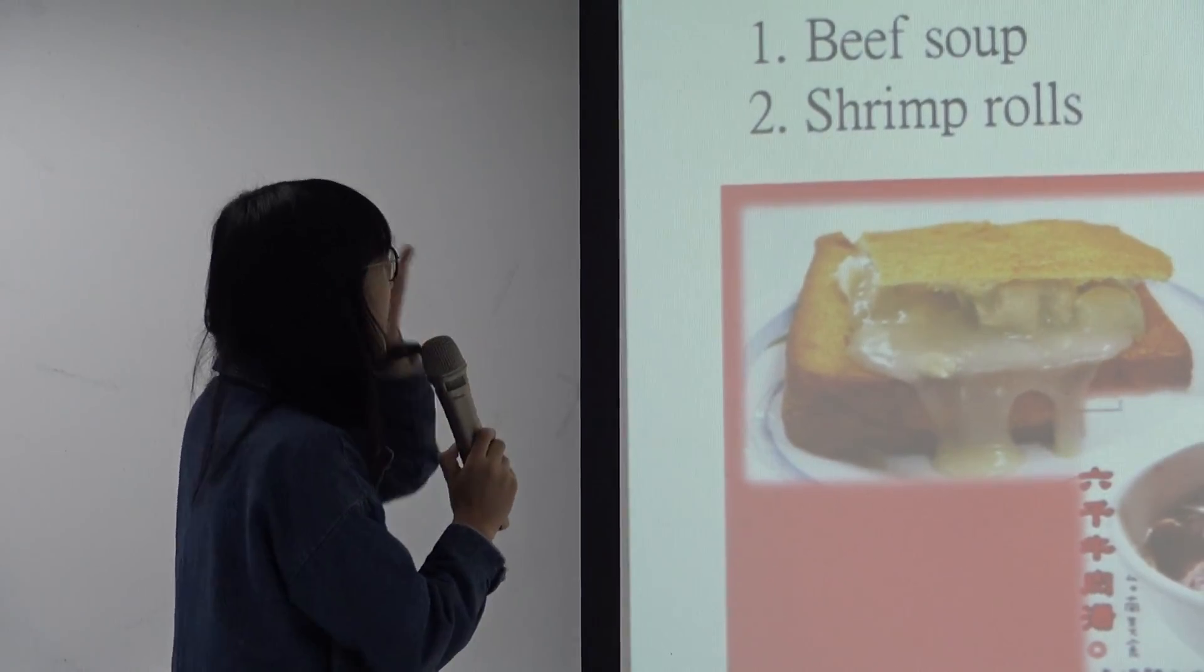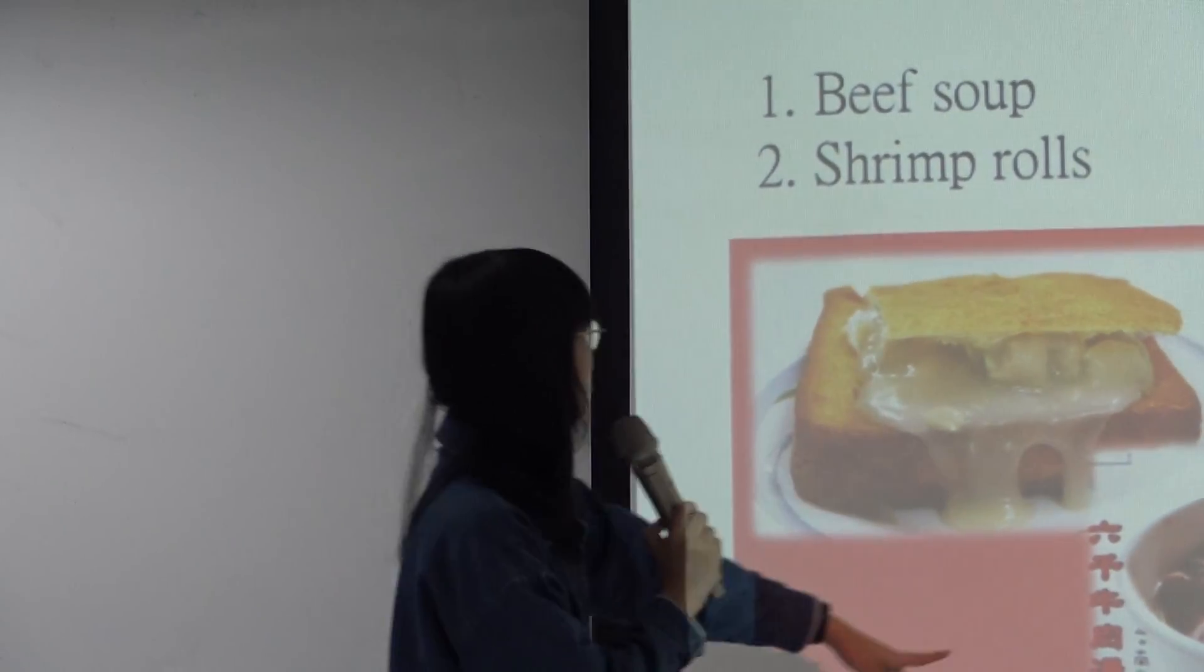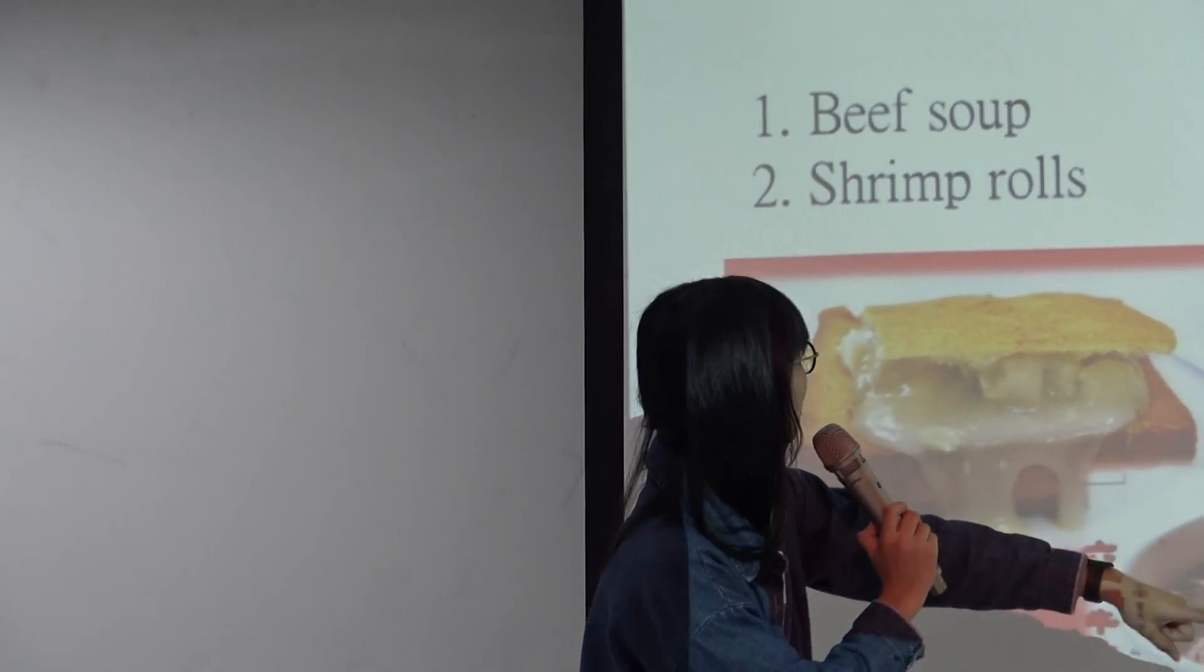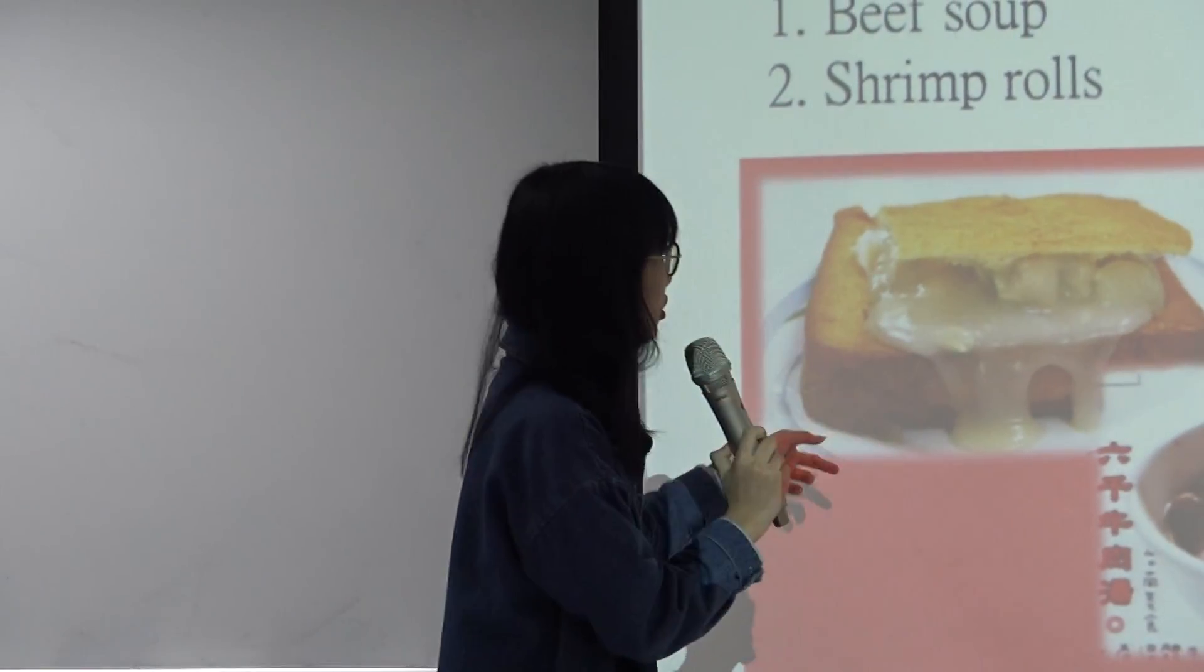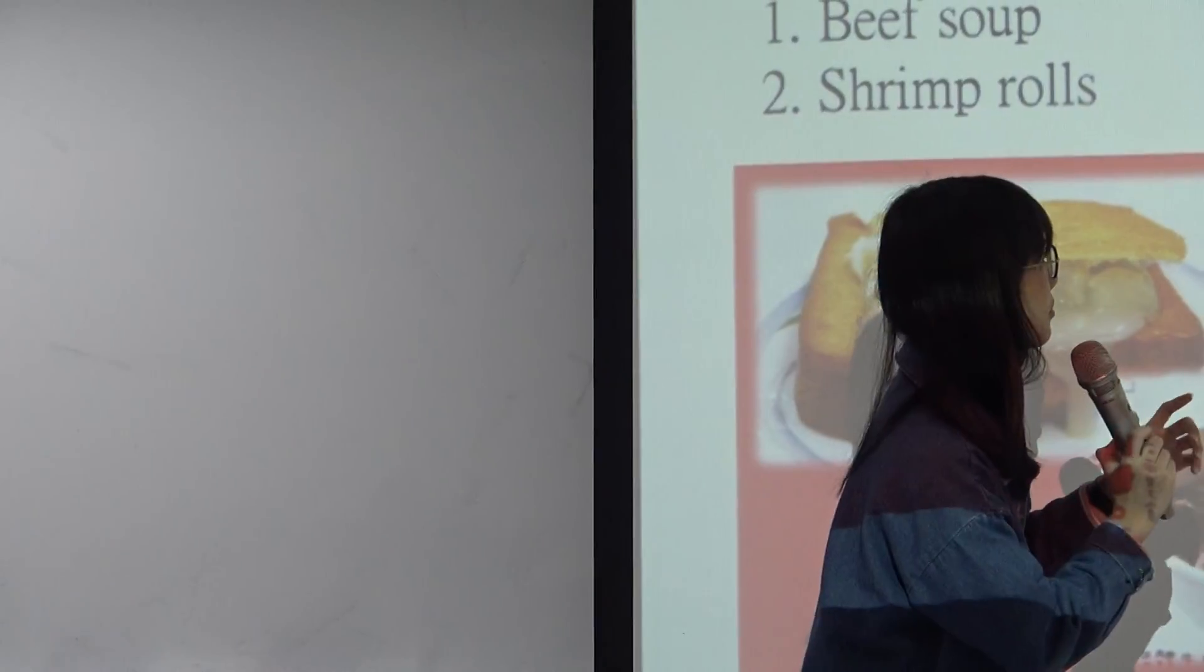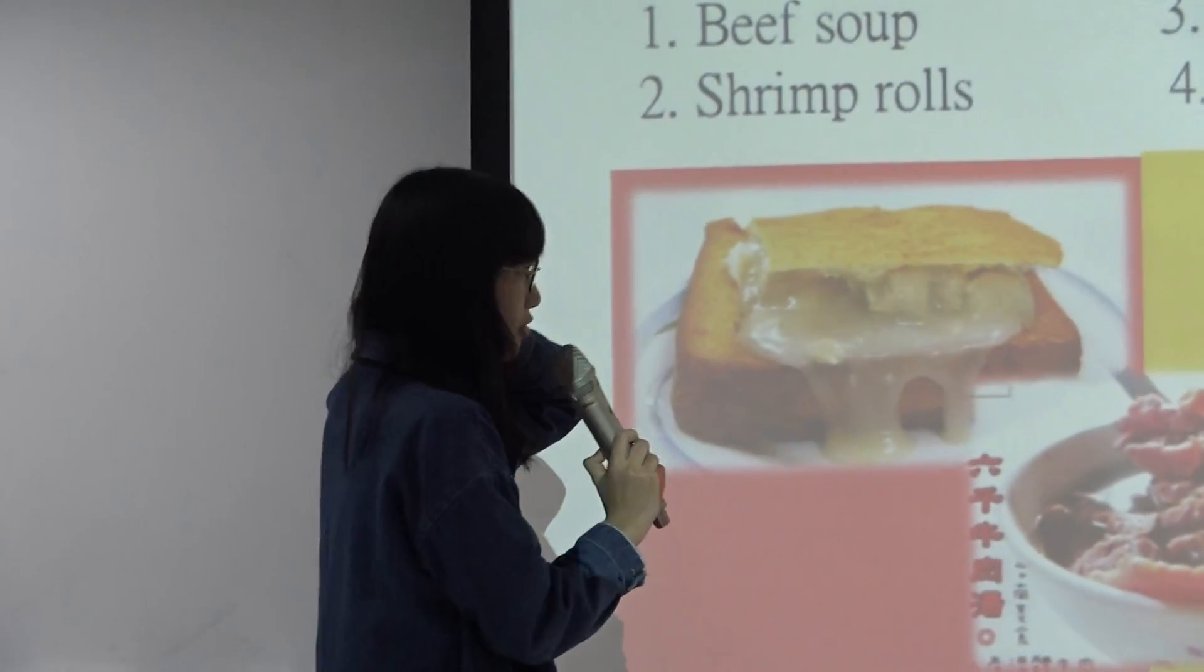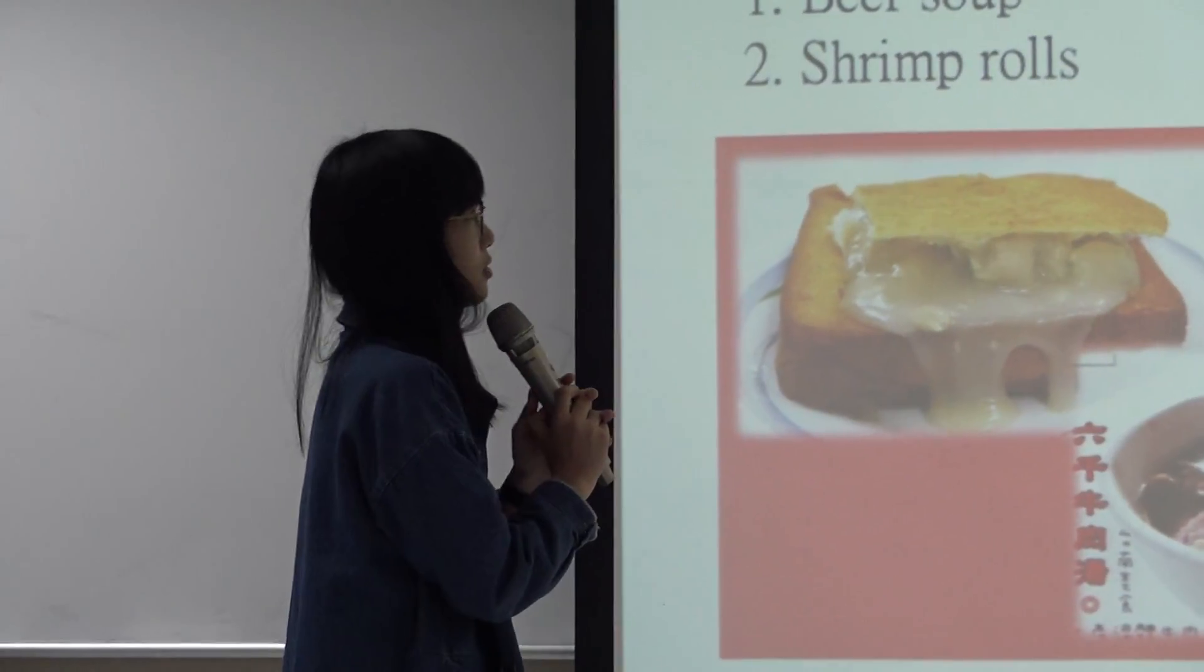There are many delicious food in Tainan. Beef soup, shrimp rolls, and coffin rolls, and calamari rice noodle soup. And the seafood is very fresh, so the soup is sweet.